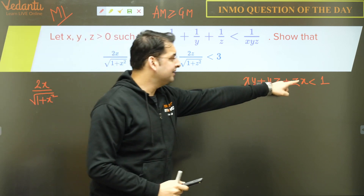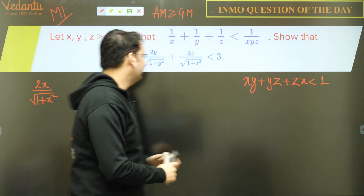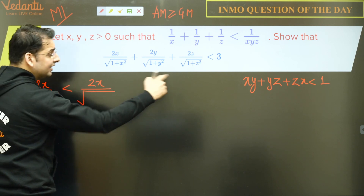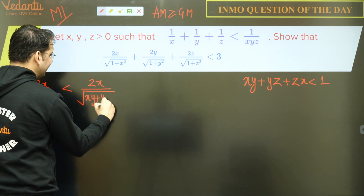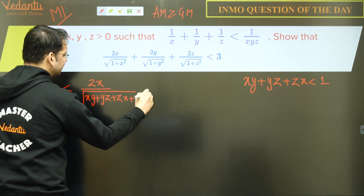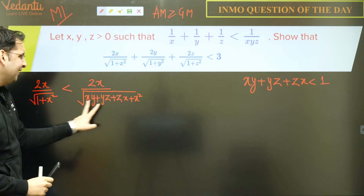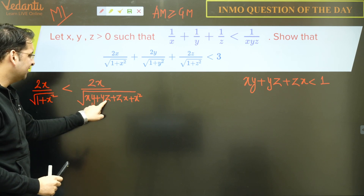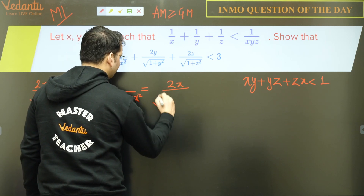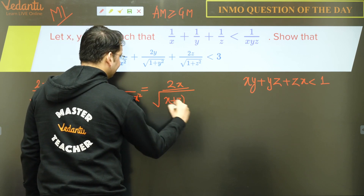So with 1 replaced, can I simplify the denominator? Inside the root we have xy + yz + zx + x², which we can factor. Taking y common gives x + z, and taking x common from the remaining gives x + z again — wait, actually factoring gives (x+z)(x+y). So this expression becomes 2x/√((x+z)(x+y)).